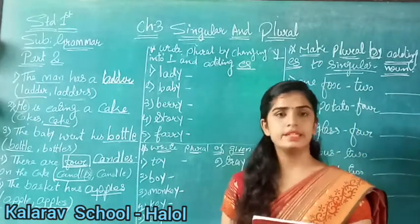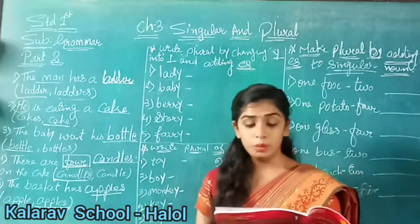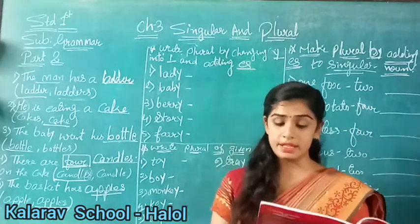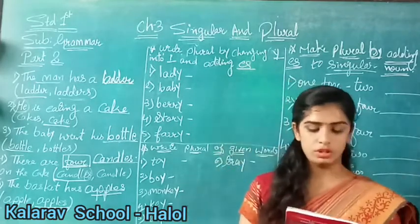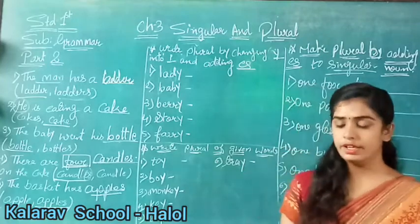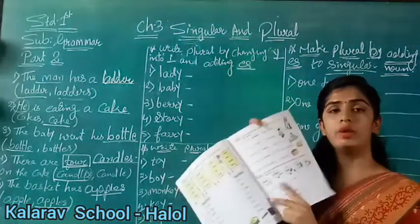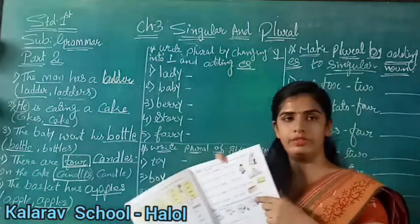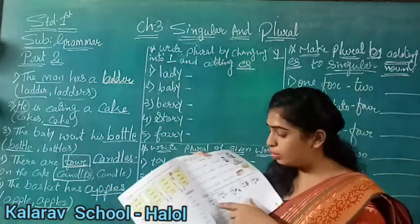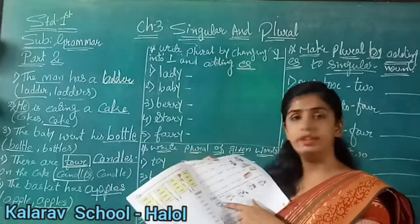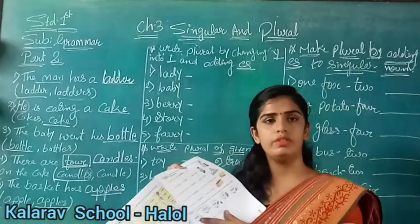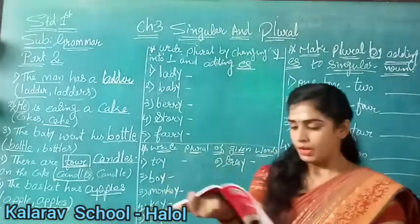Now, Exercise D: fill in the blanks with the plural nouns by adding S to the words on the balloon. In the balloons we have given different words. We have to write plurals here - singular has been given and we will write plural.